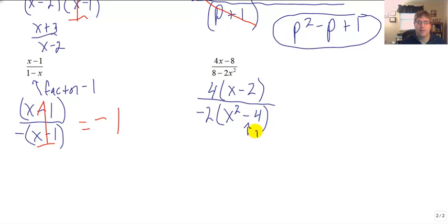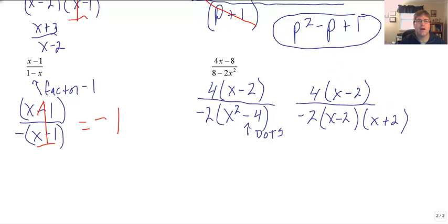And you may recognize that that is a difference of two squares. So let's keep working. 4 times x minus 2, all over negative 2 times x minus 2 times x plus 2. And now we can go ahead and cancel our common factors. Notice we are always factoring first and simplifying our common factors at the end. So x minus 2 over x minus 2 is 1.